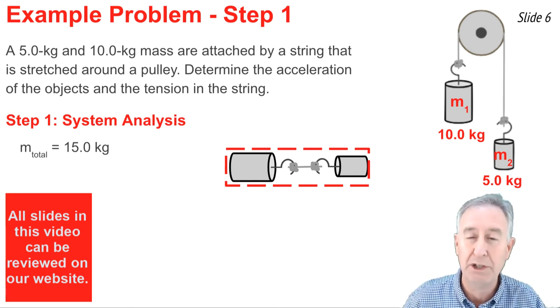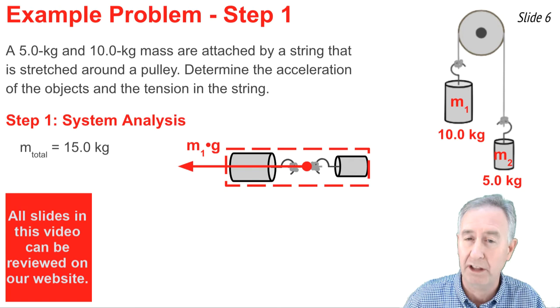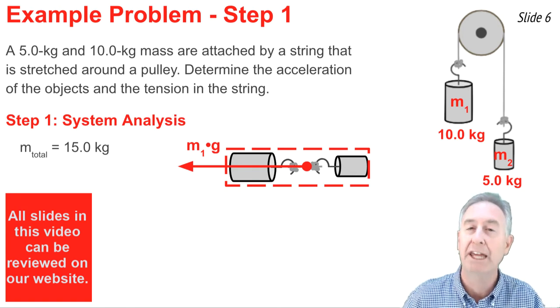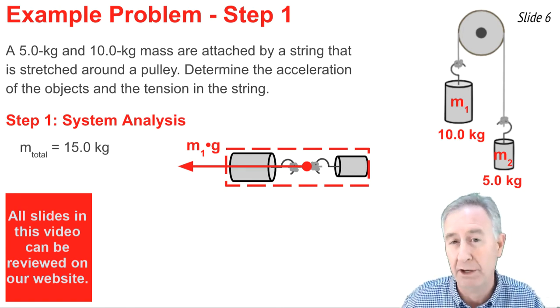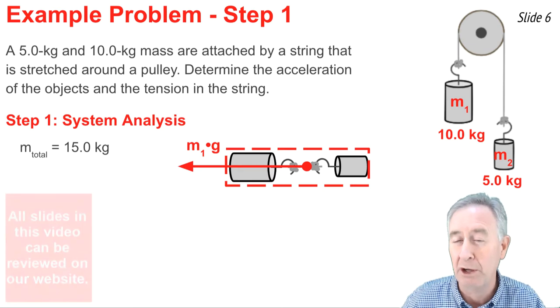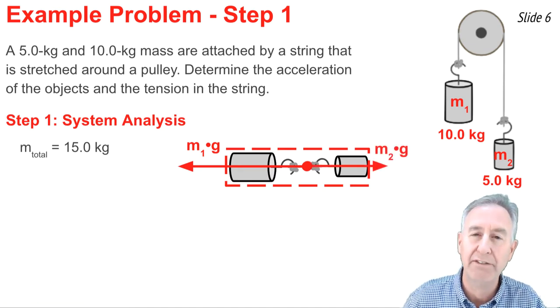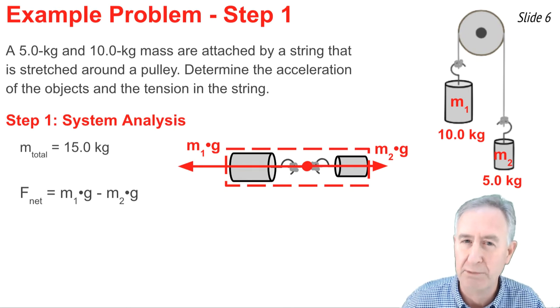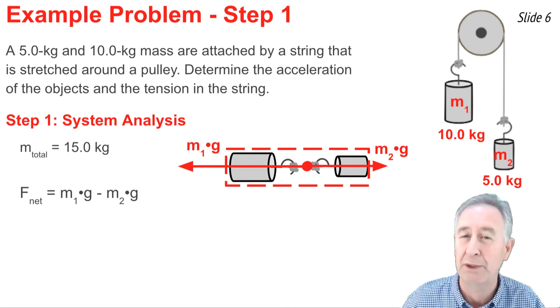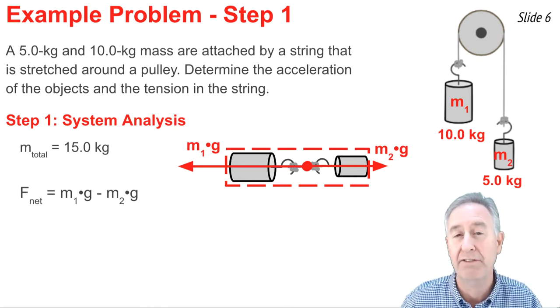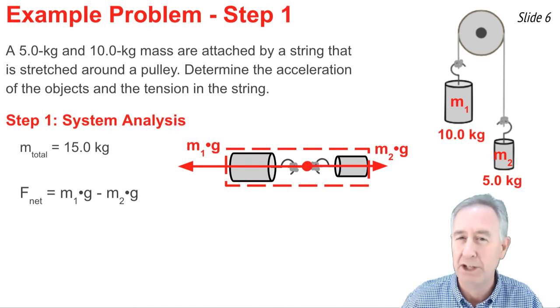There's two forces on this system, as we just mentioned. There's the force of gravity on the left side of the system, which we'll call m1g, and there's the force of gravity on the right side of the system, which we call m2g. Now what we'll do is we'll say that the F net is the bigger force minus the smaller force. That's how we always do it when they're in opposite directions. So the F net is m1g minus m2g.